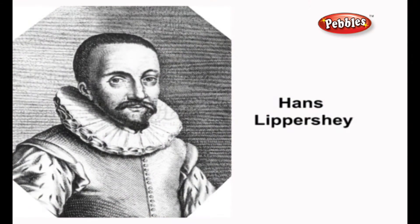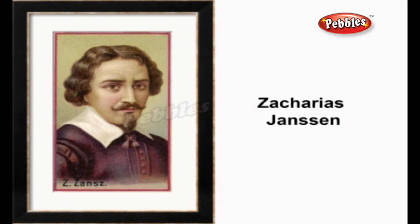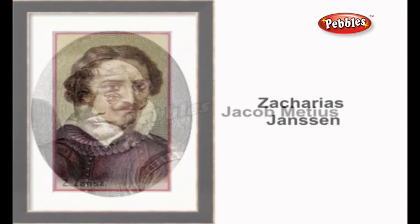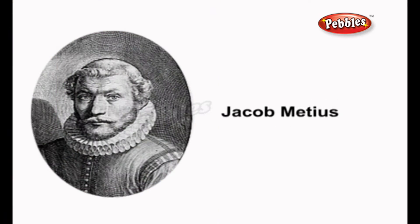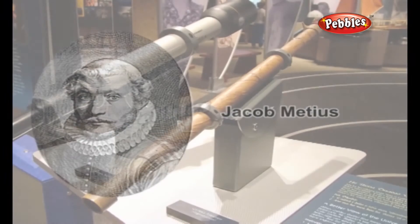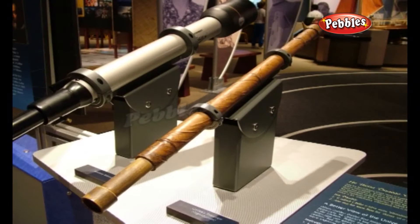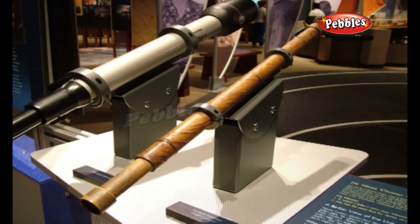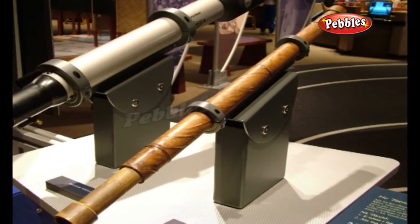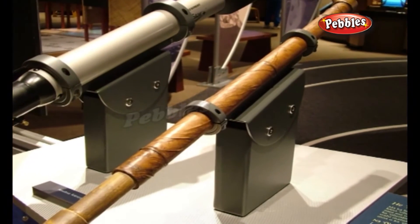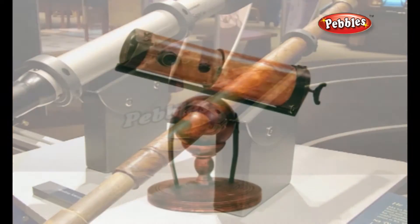Their development is credited to three individuals: Hans Lippershey and Zacharias Janssen, who were spectacle makers in Middleburg, and Jacob Matthias of Alkmaar. Galileo greatly improved upon these designs the following year. Galileo's telescope was a refracting telescope.